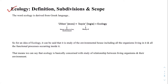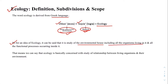The word ecology is derived from the Greek words ECOS and LOGIA. ECOS means house or place to live and LOGIA means study of. That means study of house or place to live, which denotes the word ecology. So it can be said that it is the study of environmental house including all organisms living in it and all the functional processes occurring inside it. Ecology is basically concerned with the study of relationship between living organisms and their environment.